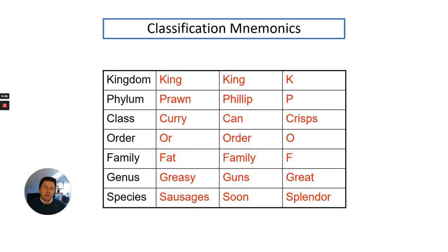Here's a couple of examples of classification mnemonics. My favorite is king prawn curry or fat greasy sausage, but you can come up with your own mnemonic. It's a really great way to remember the hierarchical structures because more than likely you're going to be asked questions on this hierarchy in your exam.